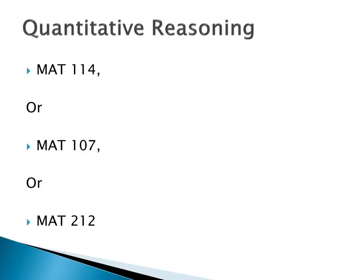You're required to take one course in the quantitative reasoning category. That course can either be Math 114, which is Mathematical Reasoning; Math 107, which is College Algebra; or Math 212, which is Probability and Statistics. Any course below these would not count towards the general education portion of your transfer degree. For instance, Math 104 or Math 105 would not count.